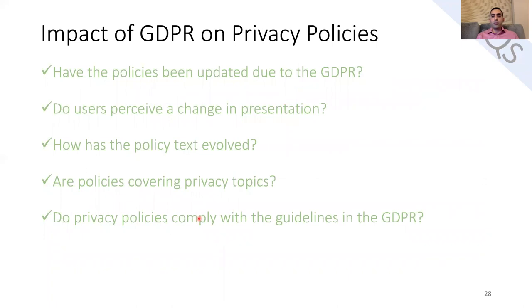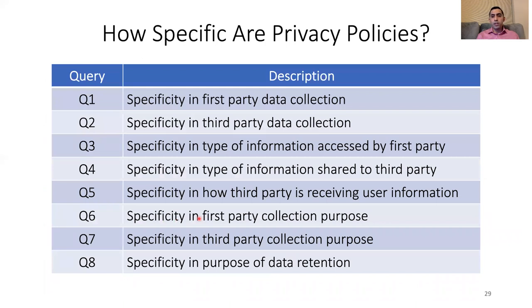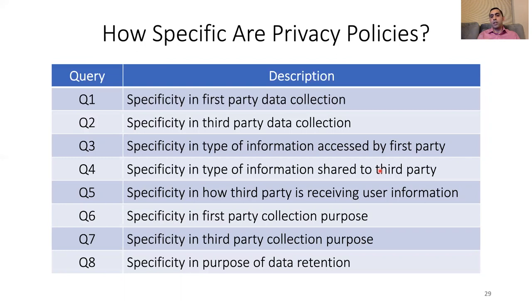Finally, we study how specific policies are in describing their privacy practices — in particular, how specific they are about types of information, third parties, and purposes of data collection, sharing, and retention. This dimension is orthogonal to compliance: a privacy policy can make a blanket statement that satisfies a GDPR clause, such as 'we share your personal data with third parties,' but might not specify the actual type of personal data shared. That's why we look at specificity as an additional dimension to compliance.